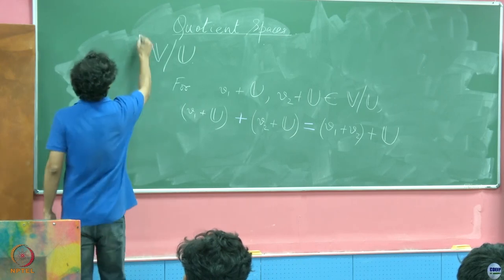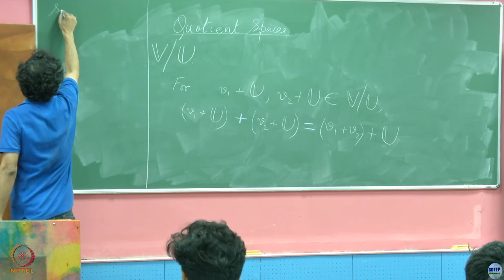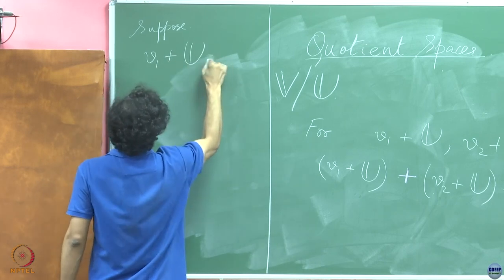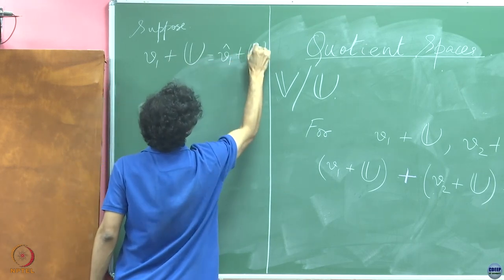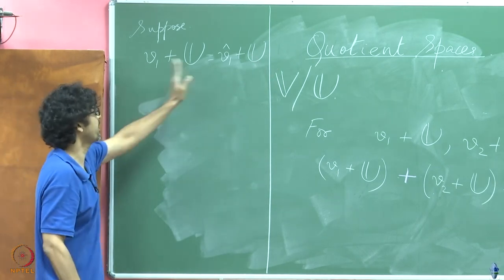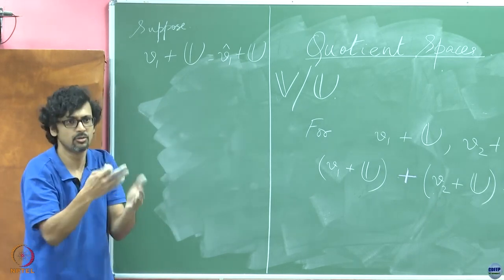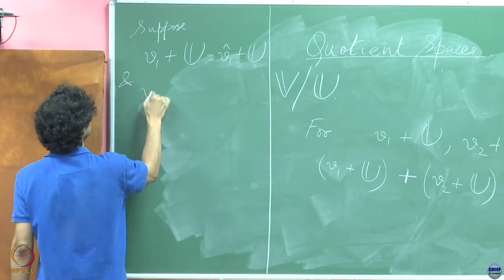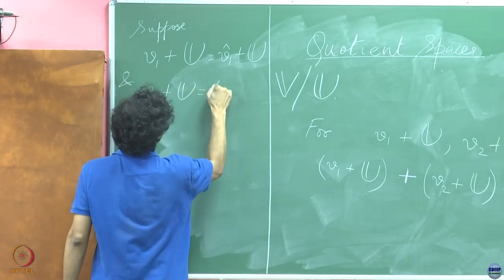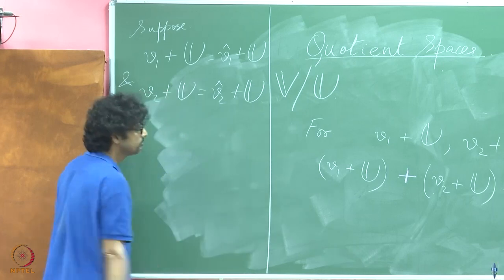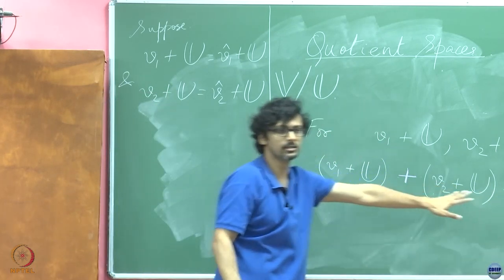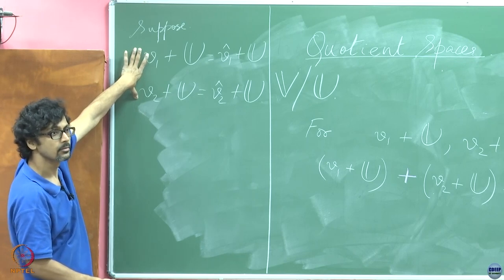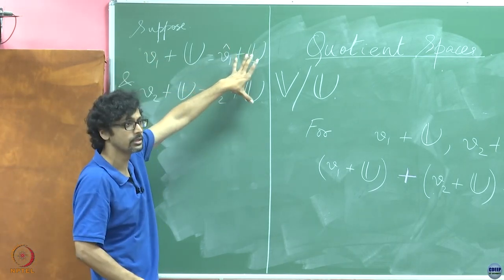We will go slowly. Suppose V1 plus U is equal to V1 hat plus U, quite possible. We have seen that multiple vectors when adding a bias to the subspace can lead to the same affine set. There is no unique way of representing it. And V2 plus U is equal to V2 hat plus U. Now this definition is sacrosanct. We have defined it in this manner. What needs to be checked is that when you are adding fellows on the left hand side of this equality and your friend is adding fellows on the right hand side of the equality, this equality must still carry over.